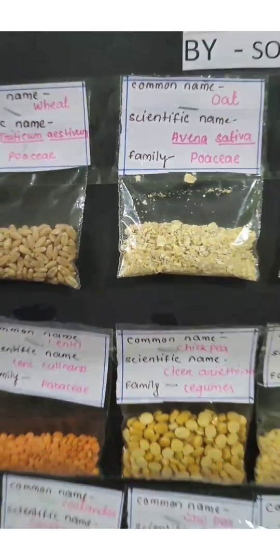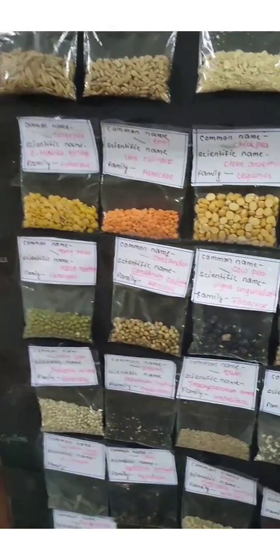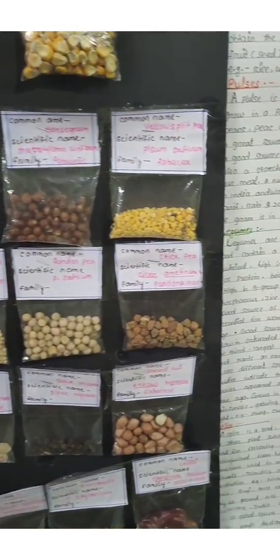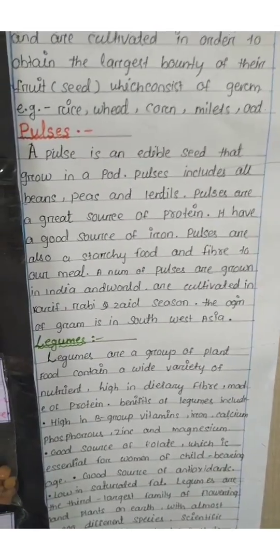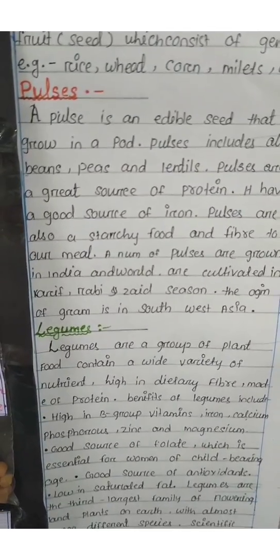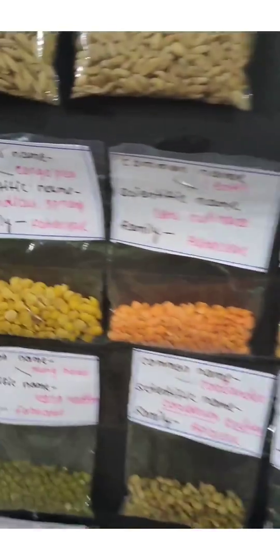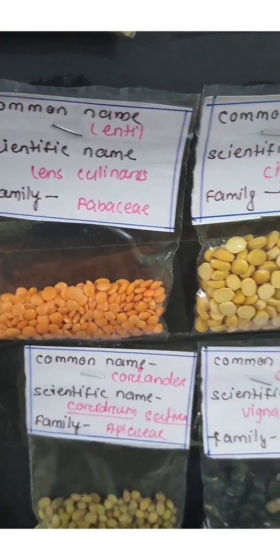Rice belongs to the family Poaceae. The second one is wheat, the scientific name is Triticum aestivum. After that, I take some different types of pulses. Pulses are grown in India. These are cultivated in Kharif, Rabi, and Zaid seasons.